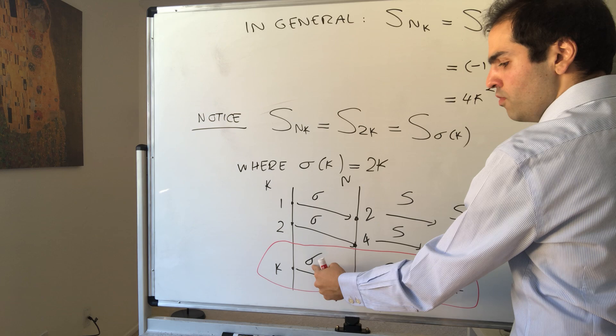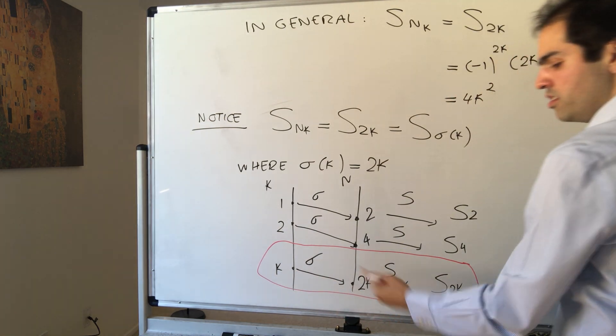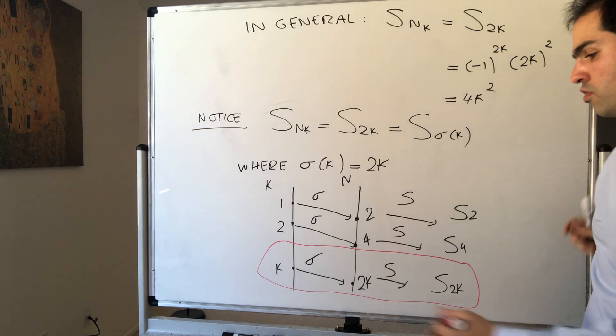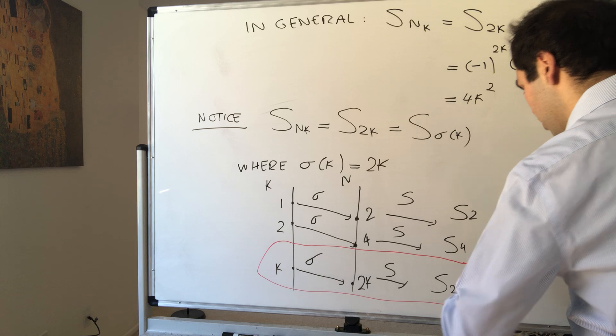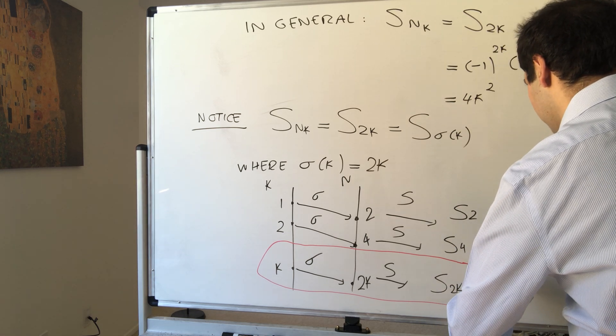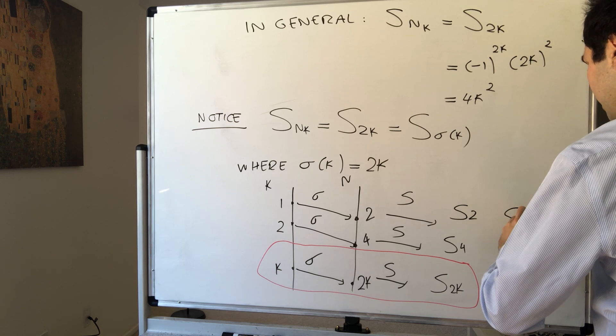So the sequence sn really takes, for instance, 2 as its input and spits out s2. Takes 4 as its input and spits out s4. And in general, takes 2k as its input and spits out s of 2k. And in fact, that's really what a subsequence is. It's just a composition of two functions. Namely, first sigma, that goes from k to 2k. And then our sequence s, which goes from 2k to s of 2k. So s of sigma k, which we would just like to think of as s of nk.